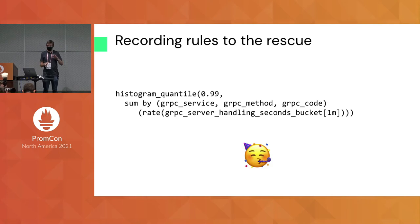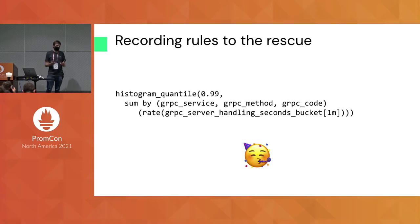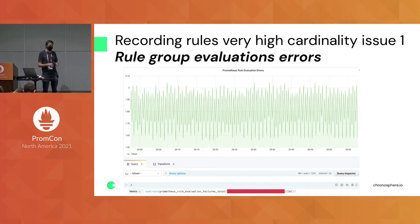A lot of folks already recognize this problem and deploy best practices to make dashboards faster, alerts more manageable, and keep this data around for longer periods of time using recording rules. Recording rules are one of the unarguably very powerful tools in the Prometheus toolset. However, at these types of cardinality, you do run into frequent problems trying to deploy them for metrics that are very high cardinality.